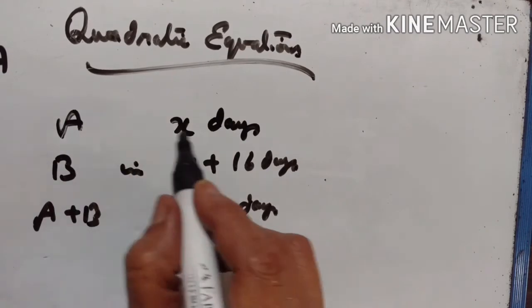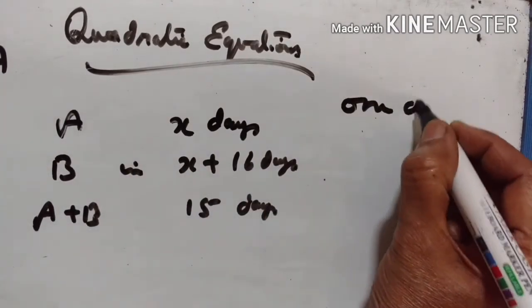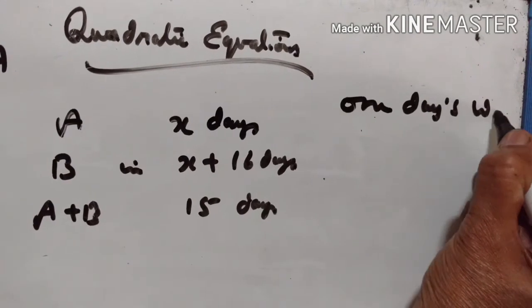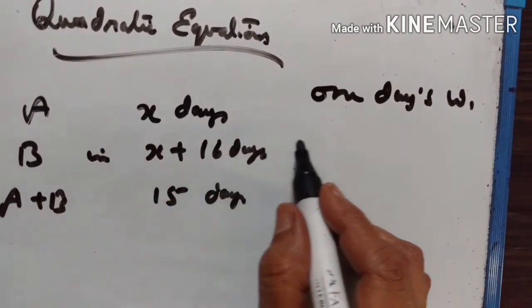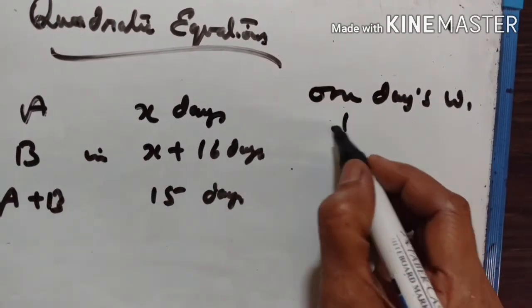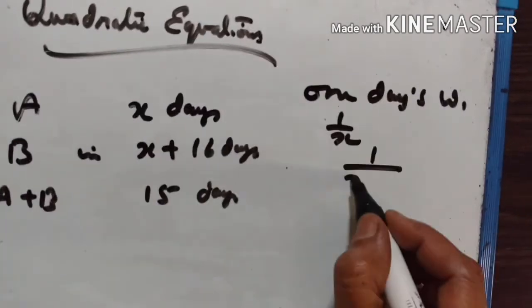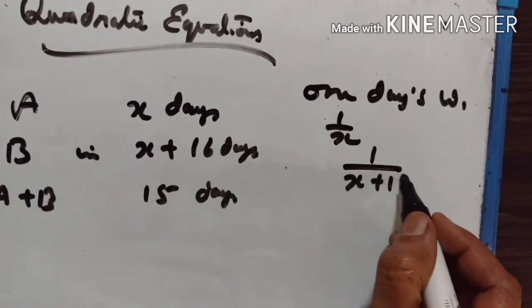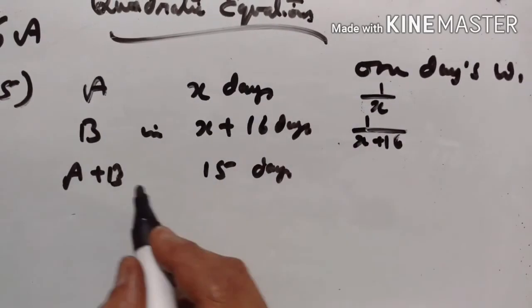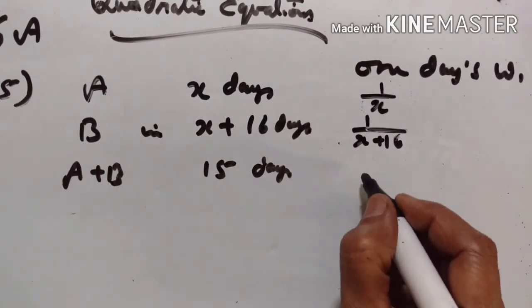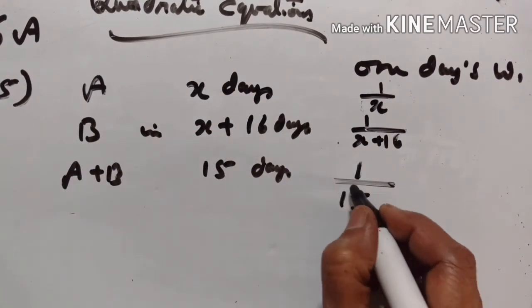A's one day's work is equal to one upon x. B's one day's work is equal to one upon x plus 16. Similarly, if they work together, their one day's work is equal to one upon 15.